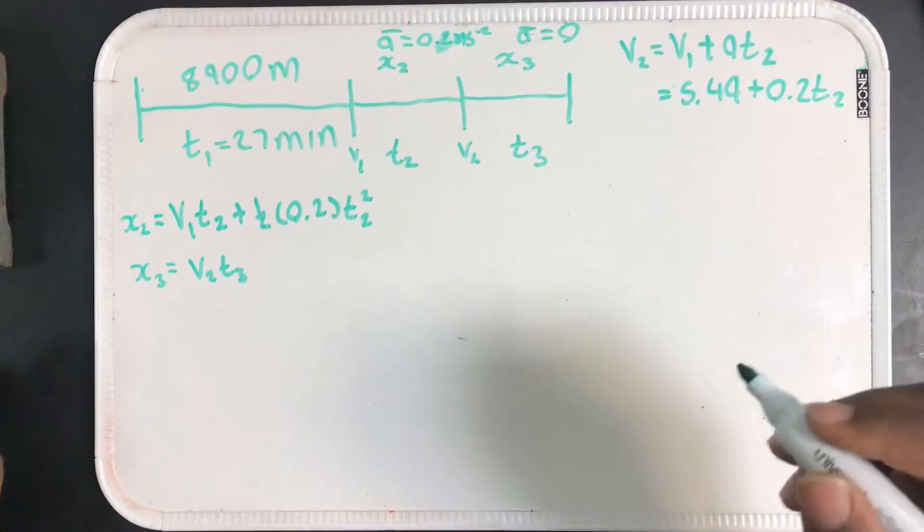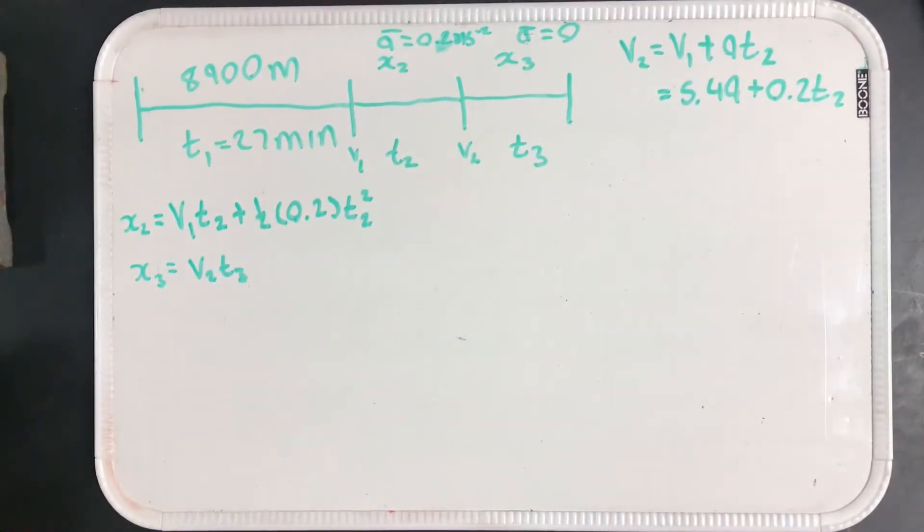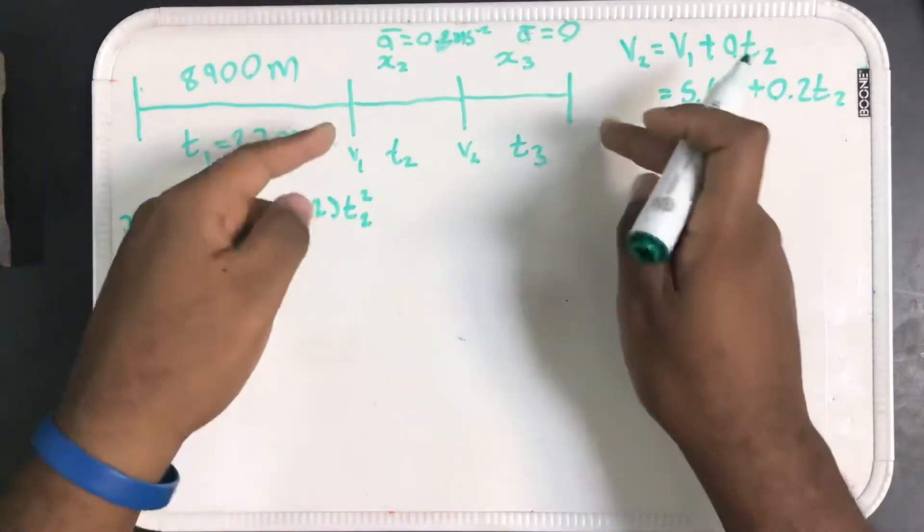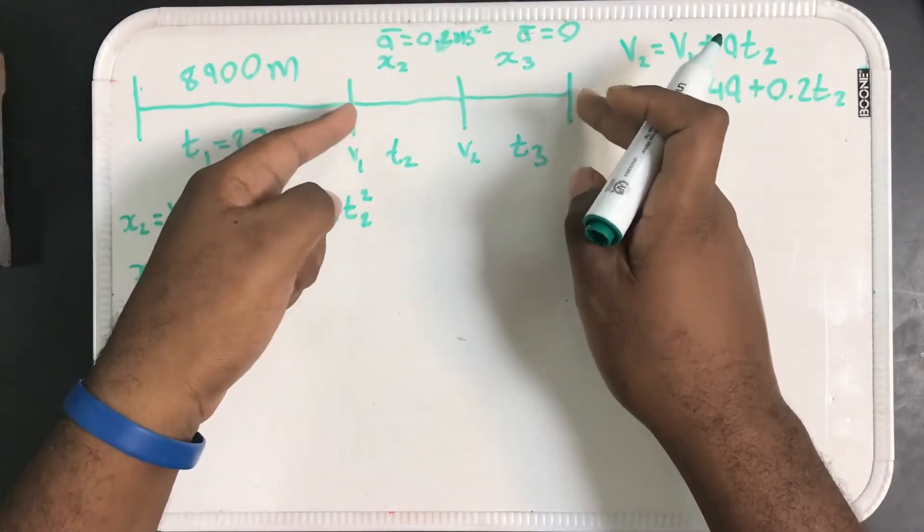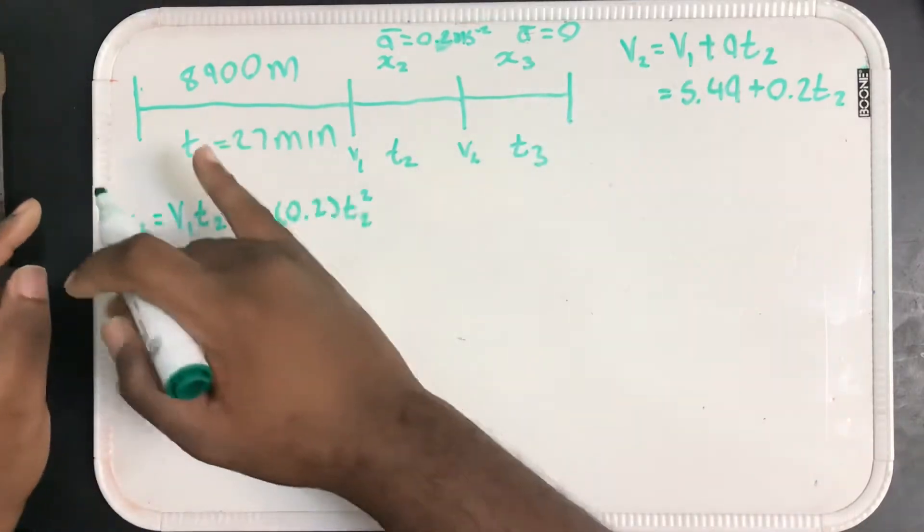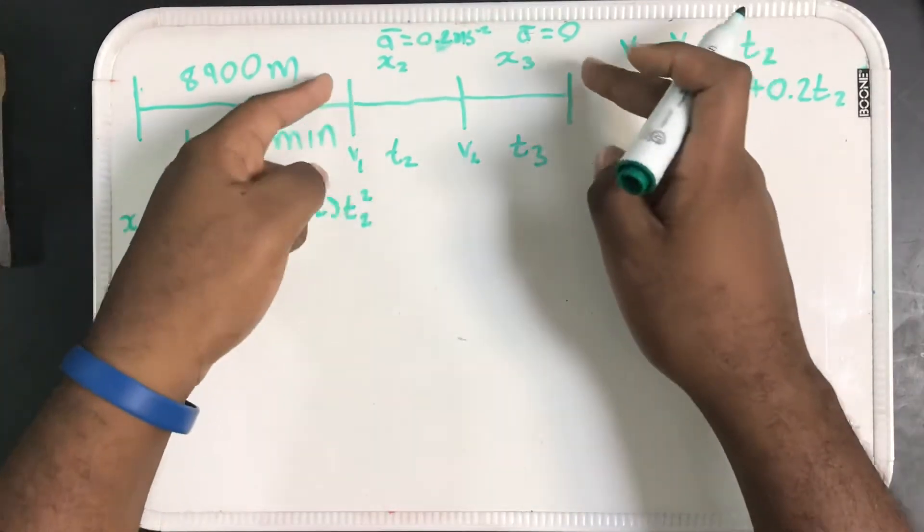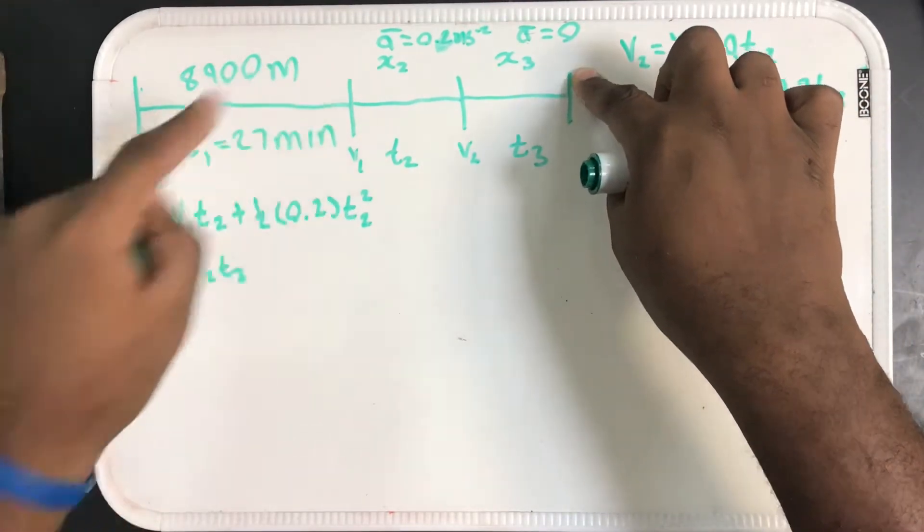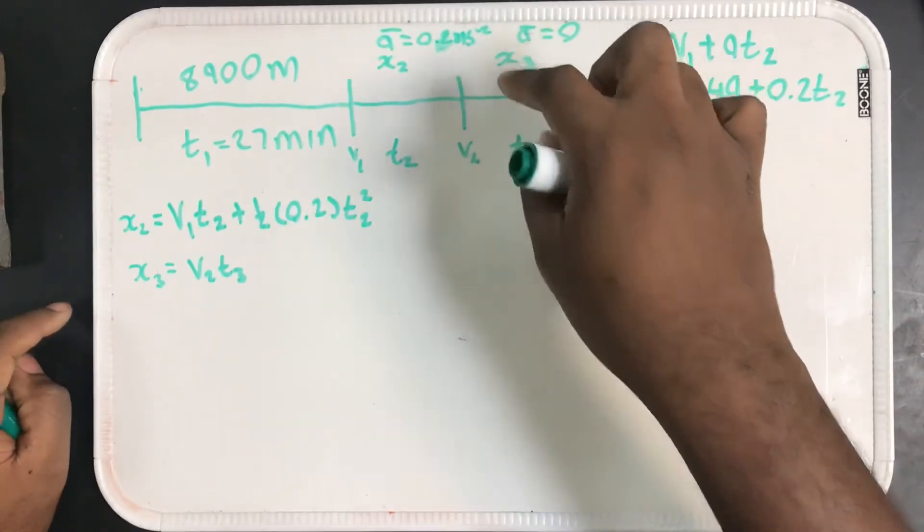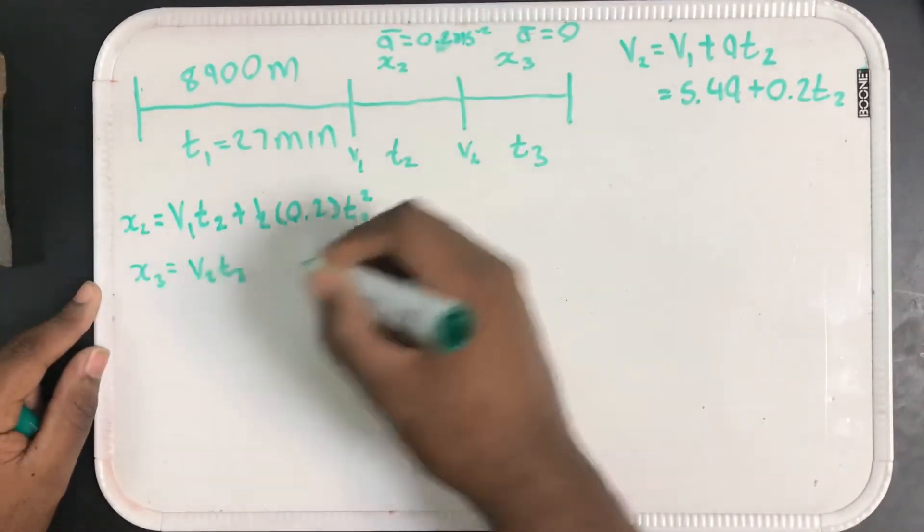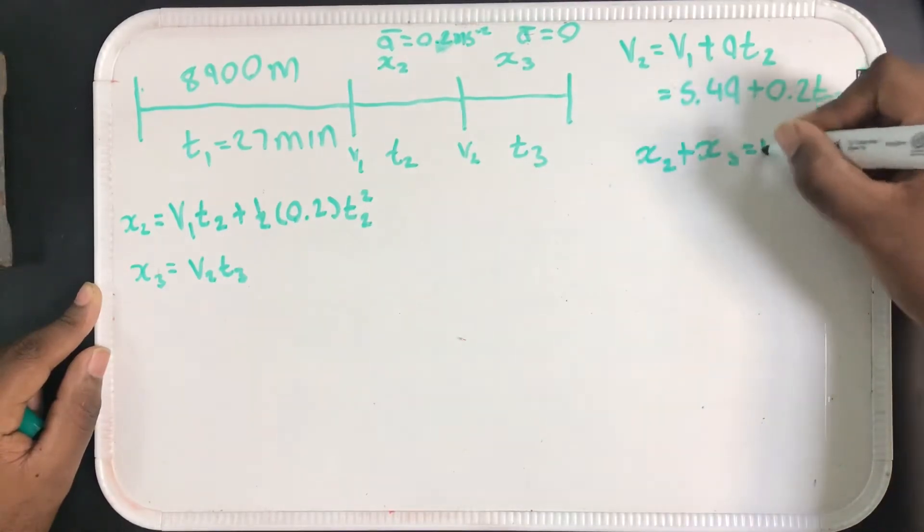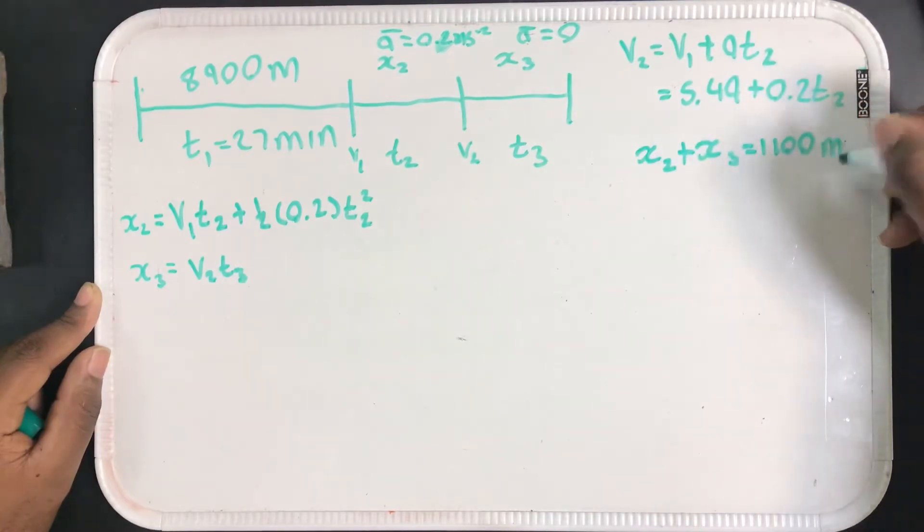I know some relationships. They said that after 27 minutes there are still 1100 meters to go. We know that this complete distance right here must be 1100 because he's already run the 8900. So this distance from this point to this point must be 1100. This part right here and this part right here must add up to 1100, so X2 plus X3 must equal 1100 meters.